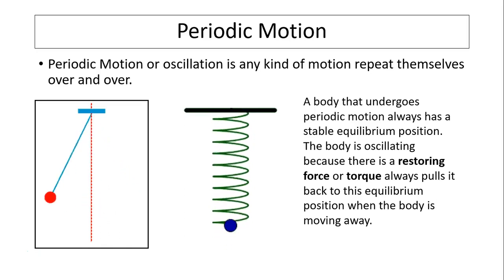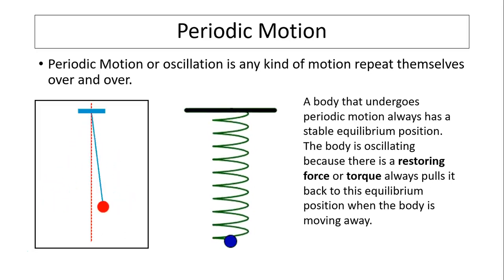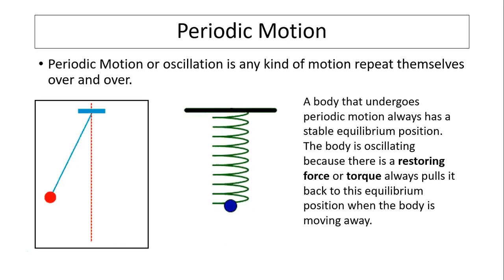Periodic motion or oscillation is any kind of motion that repeats itself over and over. Here are two examples of periodic motion: one is a pendulum, the other one is an object oscillating on a spring.